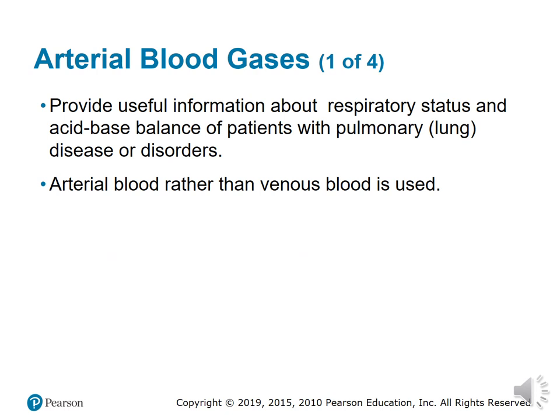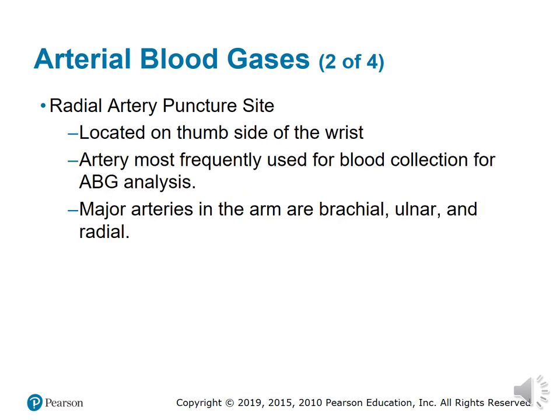Arterial blood gases provide useful information about respiratory status and acid-base balance for patients with pulmonary or lung disease or disorders. Arterial blood rather than venous blood is used. The radial artery puncture site is located on the thumb side of the wrist.